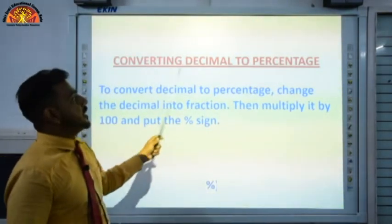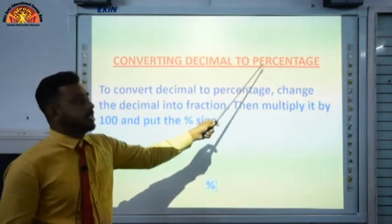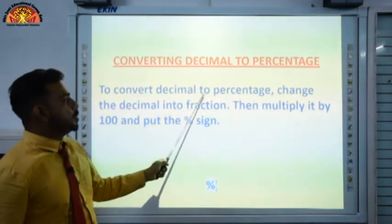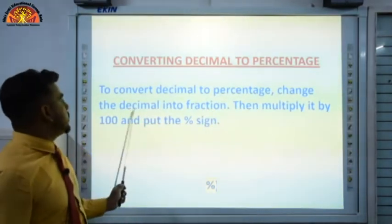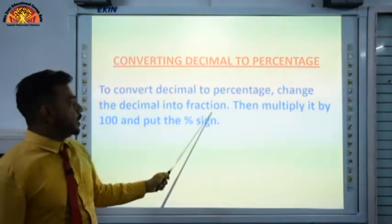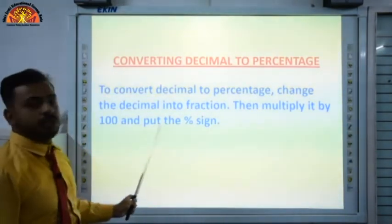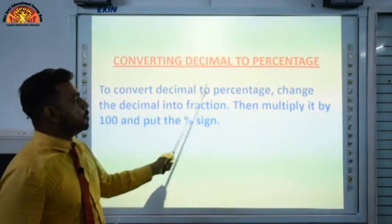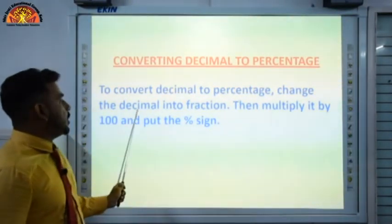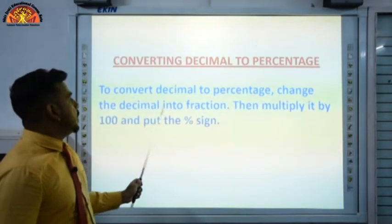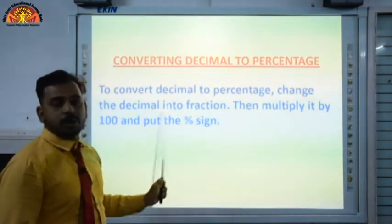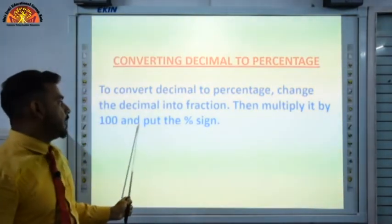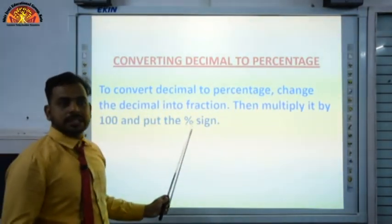Now let us discuss converting decimal to percentage. To convert decimal to percentage, first change the decimal into a fraction, then multiply it by 100 and put the percentage sign. Sabse pahle decimal ko fraction mein convert karenge, then multiply by 100.